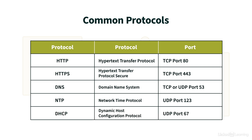Another protocol is DHCP, which stands for Dynamic Host Configuration Protocol. This is a very useful protocol because it gives us a way to automatically assign IP addresses to our network devices without having to visit each device and do a manual configuration. DHCP uses UDP port 67.